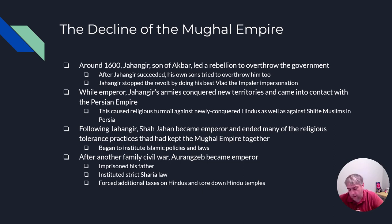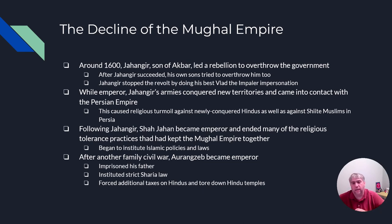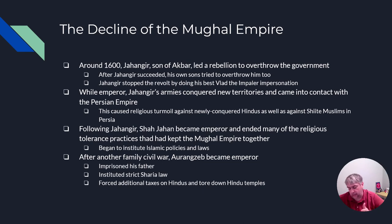Shah Jahan ends many of the religious tolerance policies that his father and grandfather had put in place, and institutes strict Islamic policies and laws, which starts to fracture the empire. He is famous for building both the Jama Masjid Mosque and the Taj Mahal — the Taj Mahal being the tomb for his favorite wife, a woman named Mumtaz Mahal.